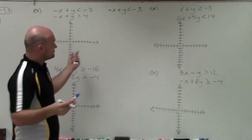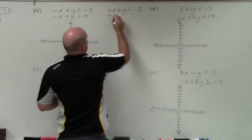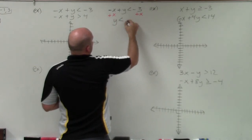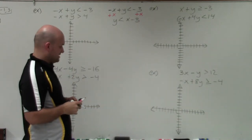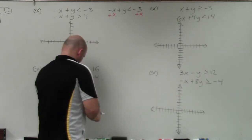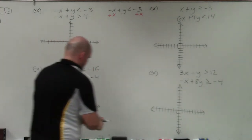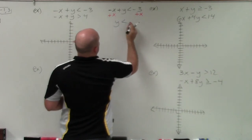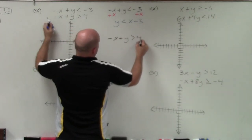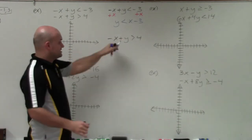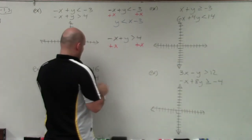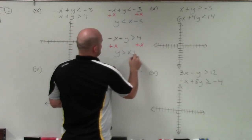I'm going to rewrite these in slope-intercept form over here to the right. I just want to get y by itself. So I work that out and obtain y is less than x minus 3. Then for the next equation, negative x plus y is greater than 4: to undo subtracting x, I add x to both sides, and I obtain y is greater than x plus 4.